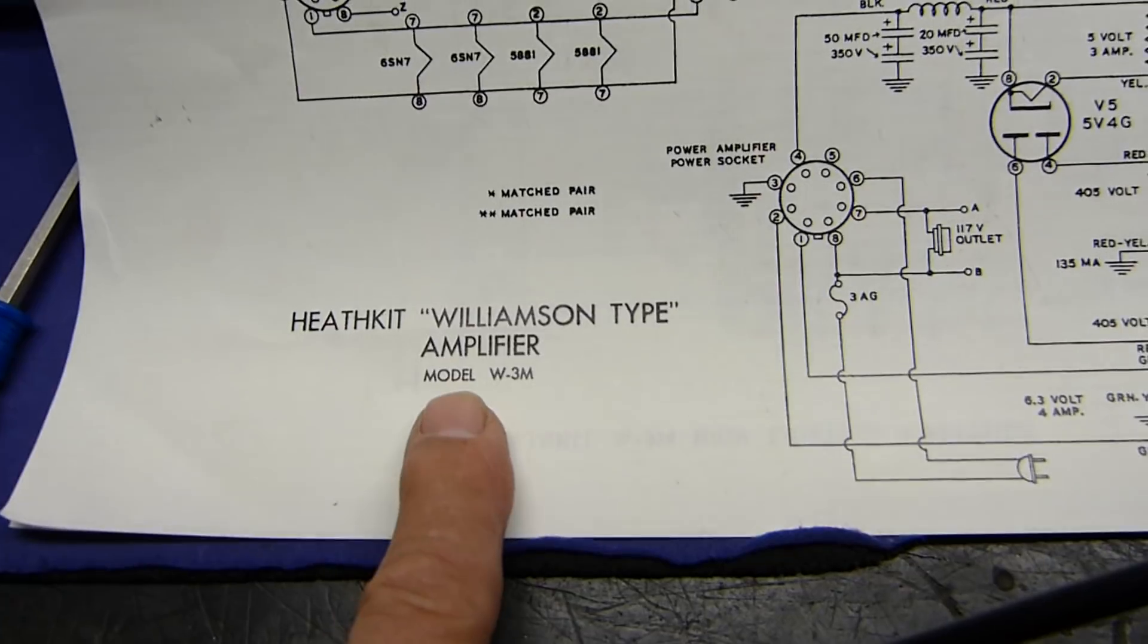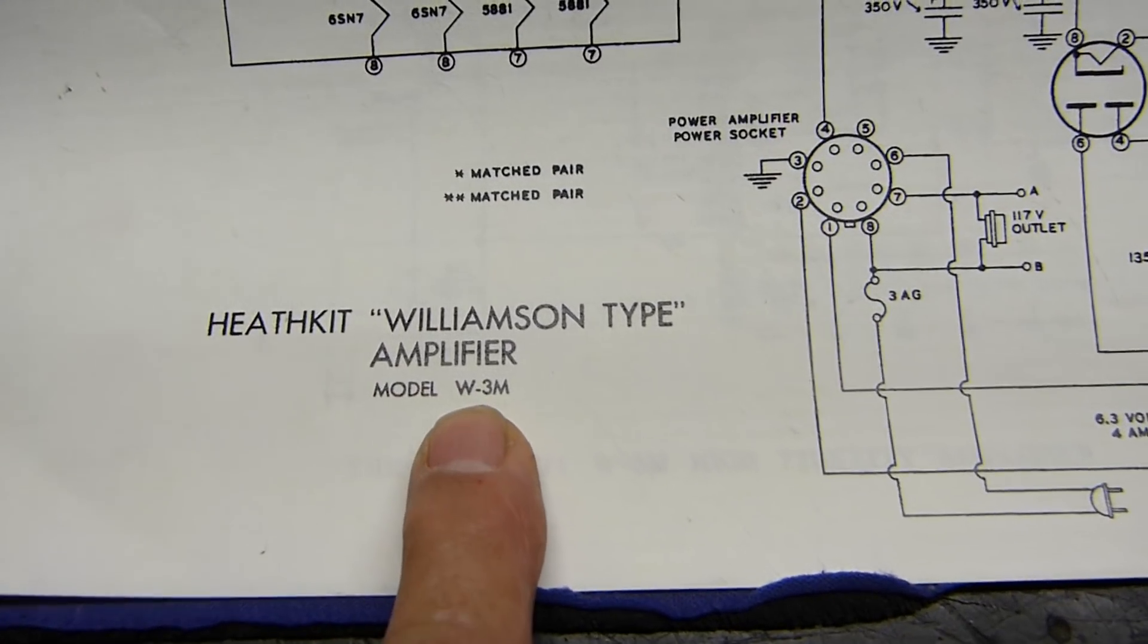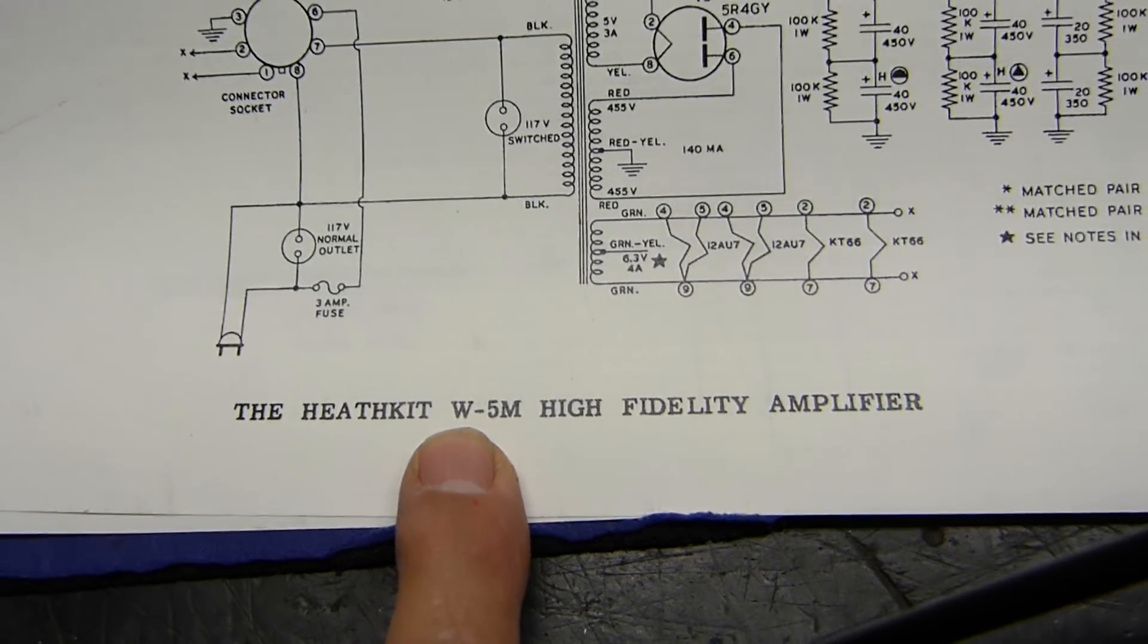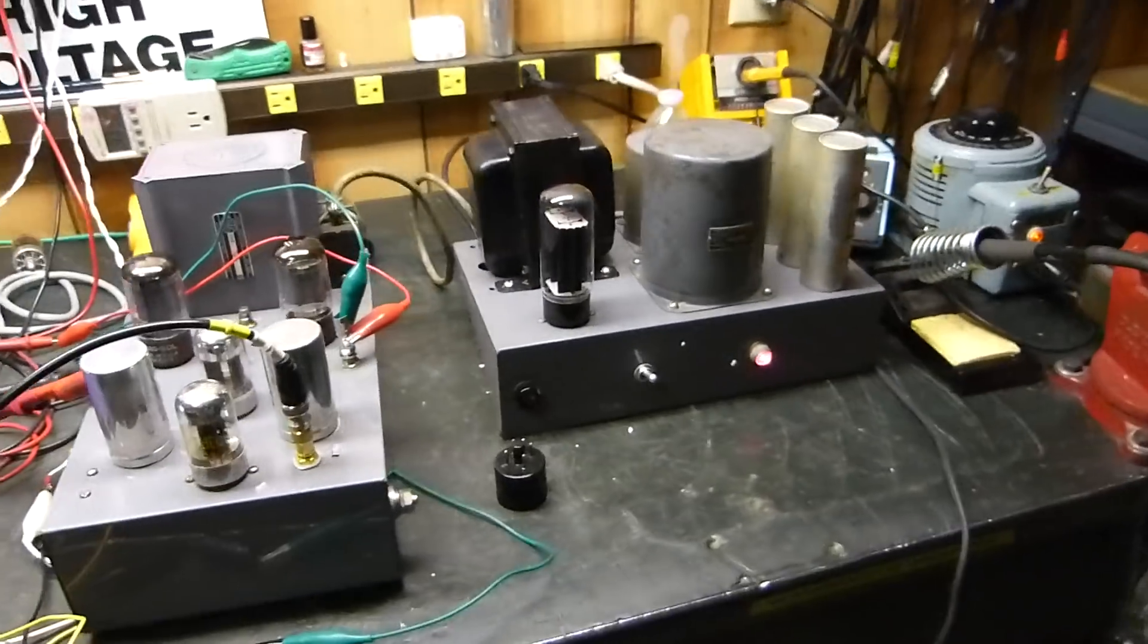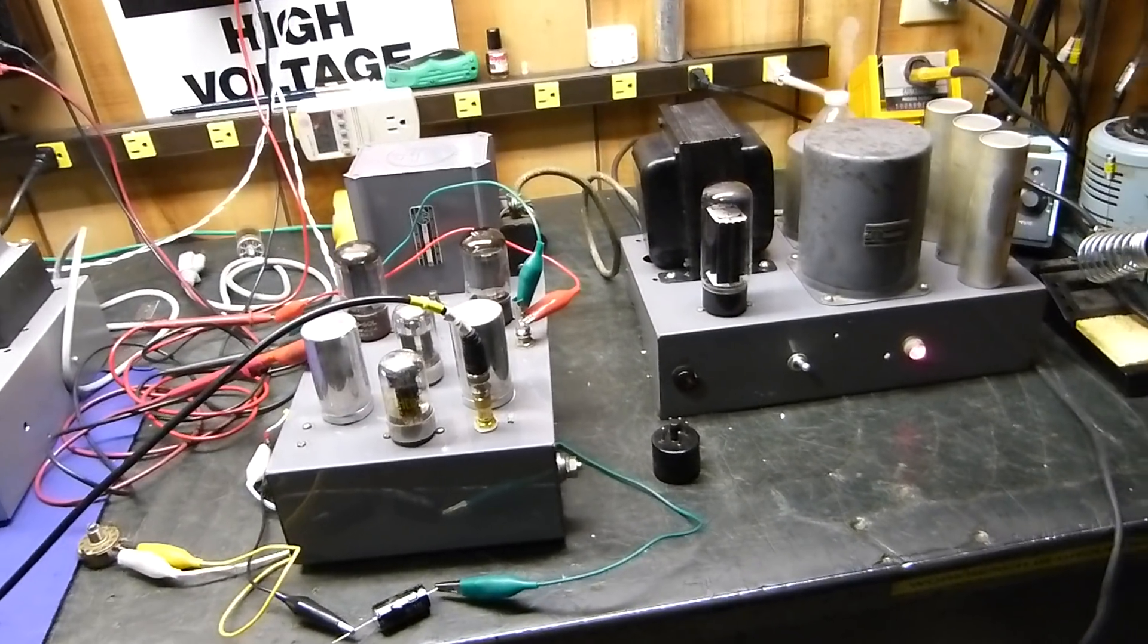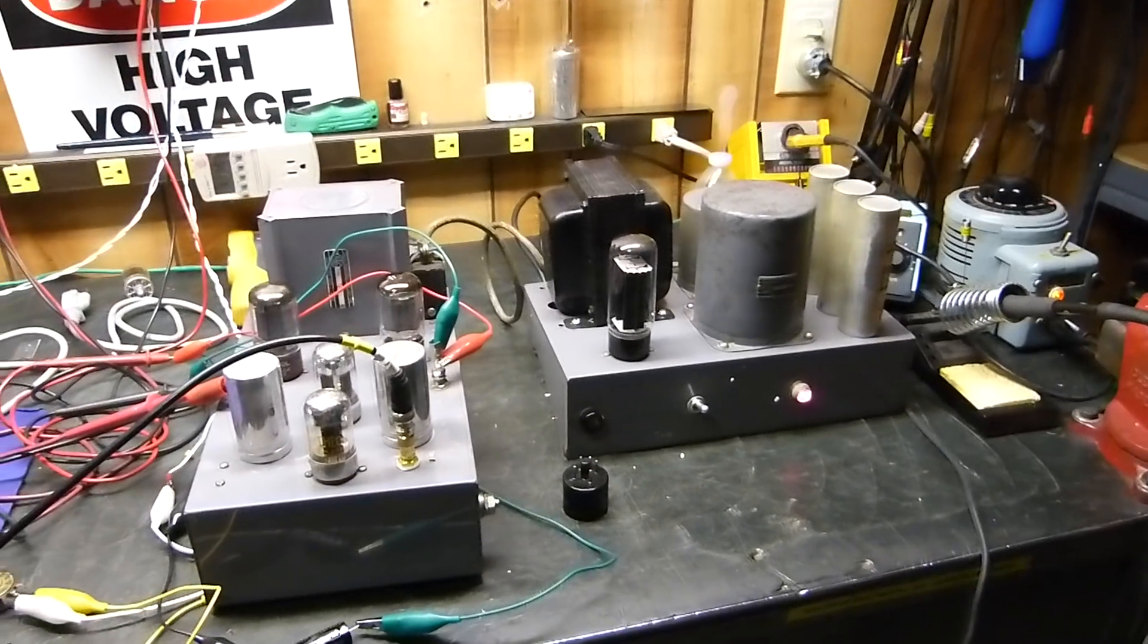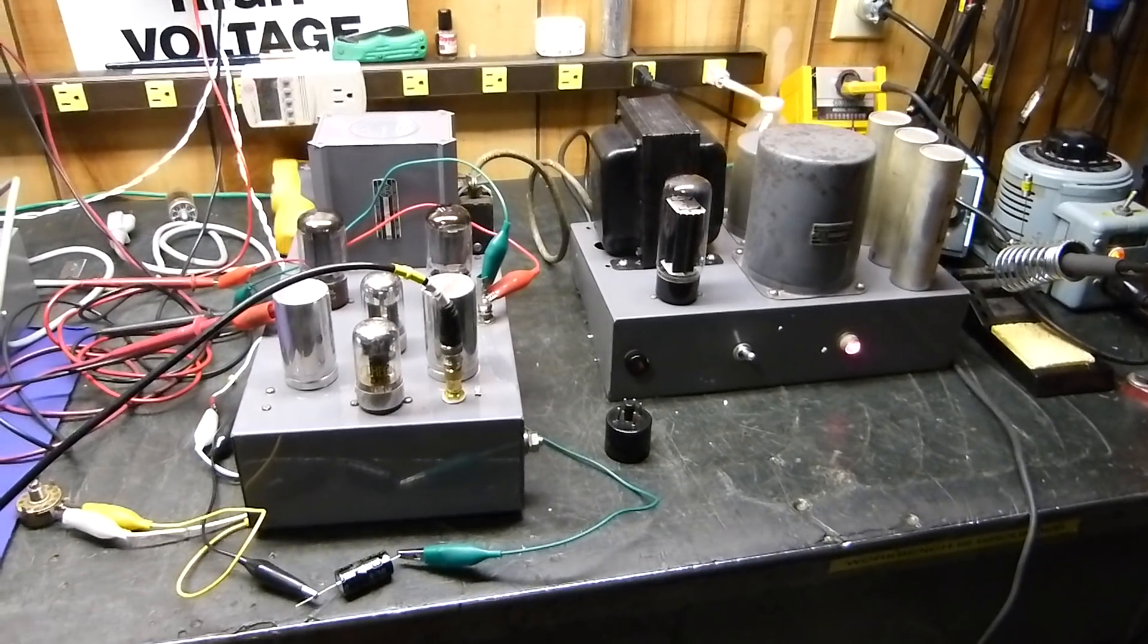Can't beat it. This is a Heathkit-Williamson type amplifier model W3M. The more modern version is a W5M. So anyway, I like to document this stuff as it comes through my shop. Because I'll probably never see another one again. And I hope you guys enjoy it. So there's the mighty UTC-W10. And it does a good job at 10 watts. Thanks for watching.